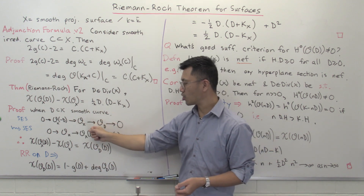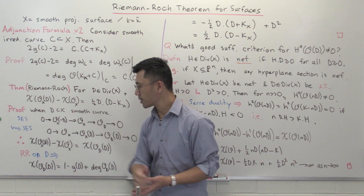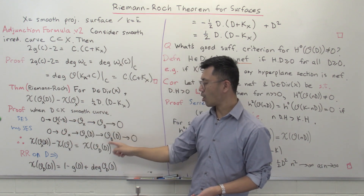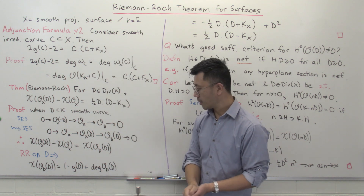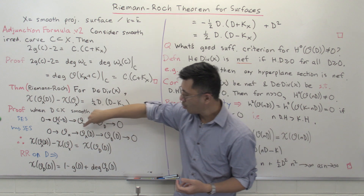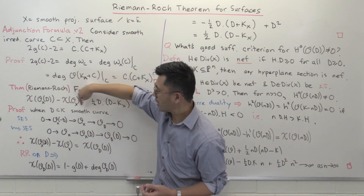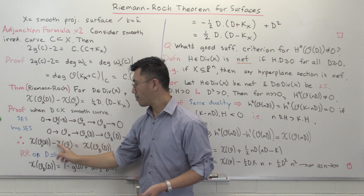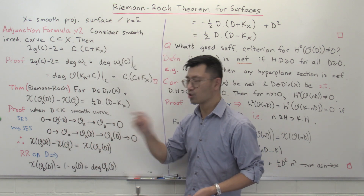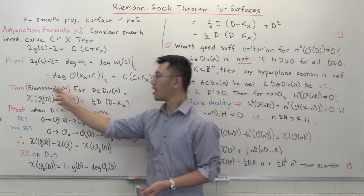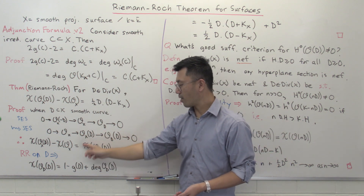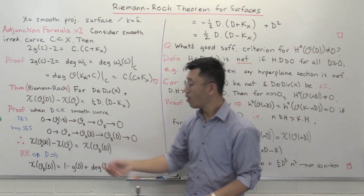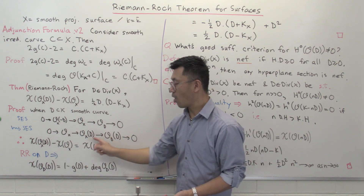We have the following exact sequence: the structure sheaf O_X maps onto the structure sheaf of D, with kernel O_X(−D). Tensoring this by O_X(D), O_X becomes O_X(D), the kernel becomes O_X, and the cokernel is O_D(D) restricted to D. From this exact sequence, chi(O_X(D)) minus chi(O_X) equals chi of O(D) restricted to D. So the left-hand side — which is the quantity we're interested in — equals this Euler characteristic of an invertible sheaf on D. Since it's an invertible sheaf on a curve, we can use Riemann-Roch for curves to study this Euler characteristic.